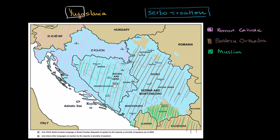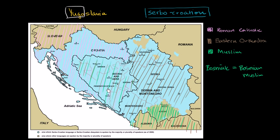Bosnia and Herzegovina is where things get really mixed up. Roughly half of the population — and it's been shifting over the centuries — practices Islam as the dominant religion. When people talk about a Bosniak, they're referring to a Bosnian Muslim. But Bosnia and Herzegovina also has significant fractions of Serbs who are Eastern Orthodox, about a third of the population, and also a sizable Roman Catholic population, or Bosnian Croats.